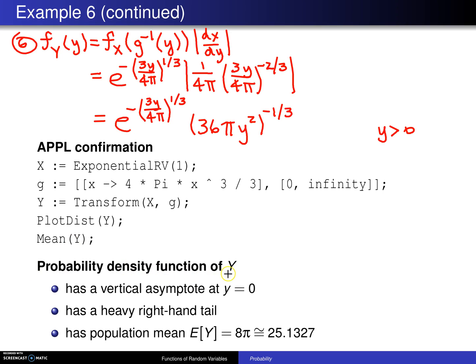So here's a couple things about the probability density function of Y. Because of this Y raised to the—I'm sorry—Y to the negative two-thirds power, this has a vertical asymptote at y equals zero, has a very heavy right-hand tail, and furthermore if you look at the population mean, it is the expected value of Y is eight pi, or 25.1327.